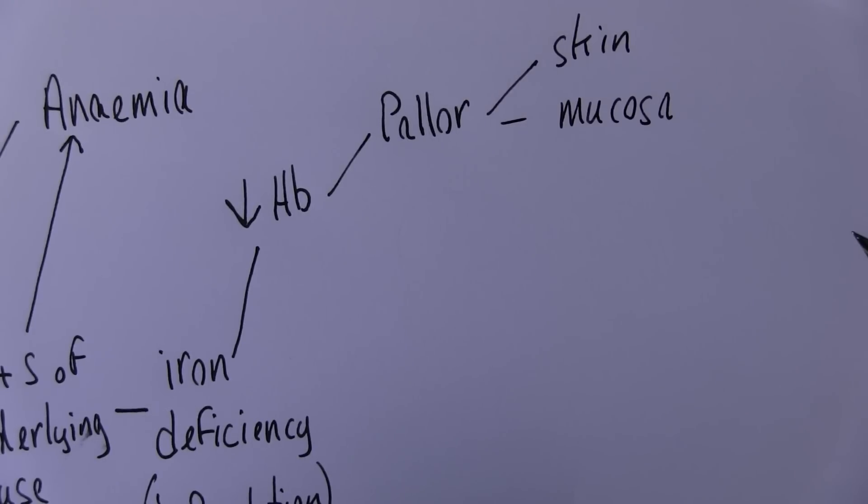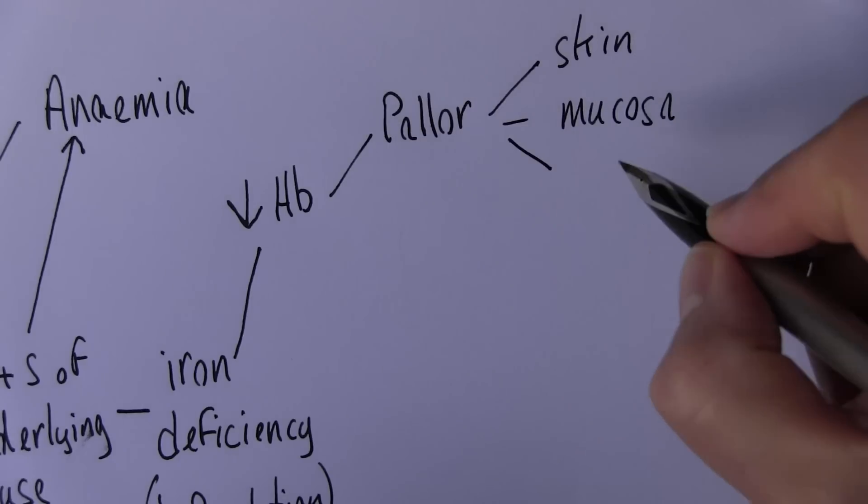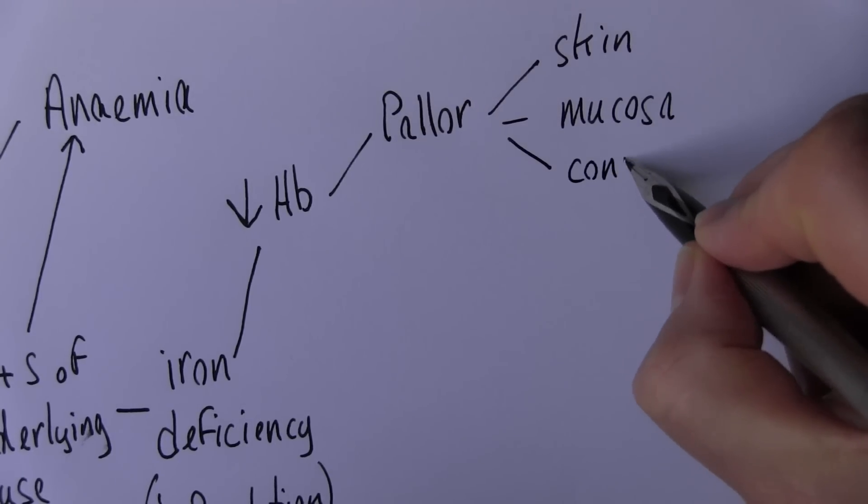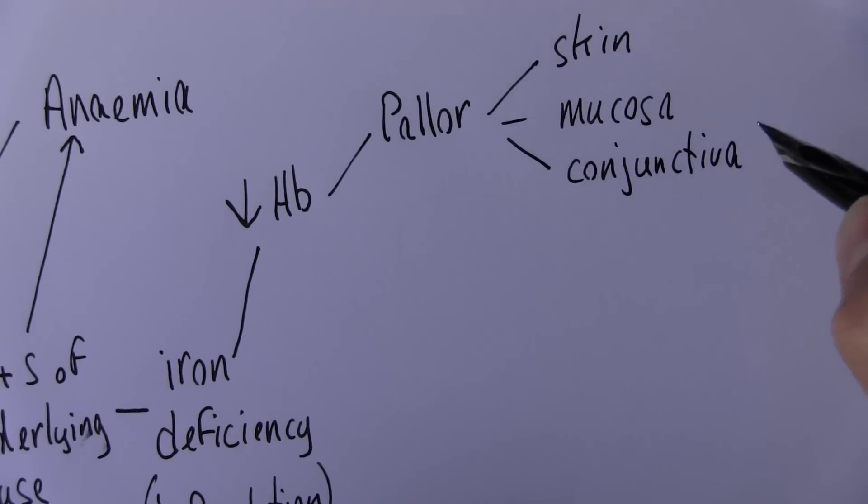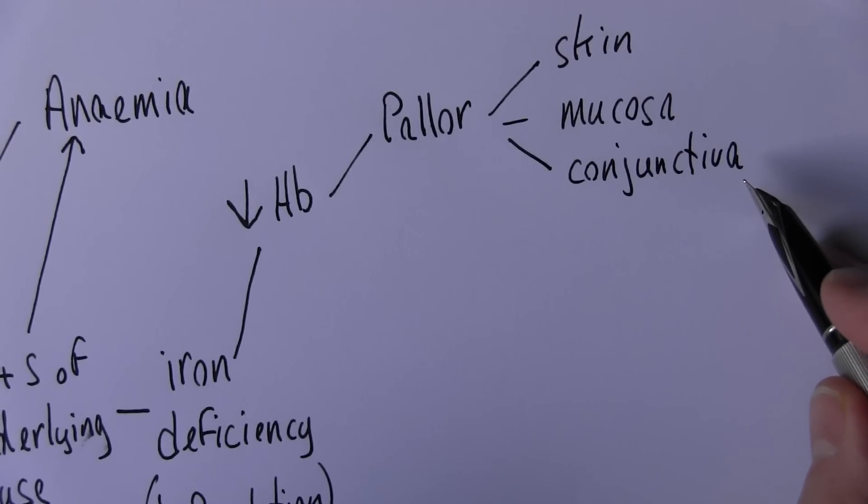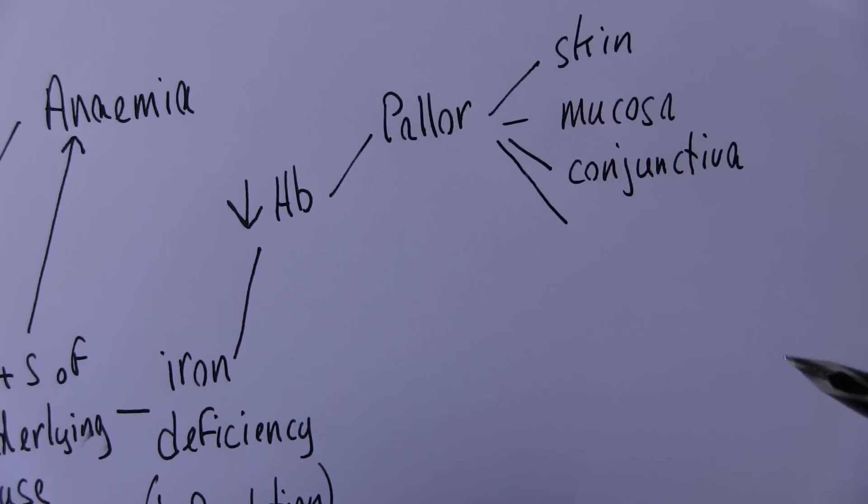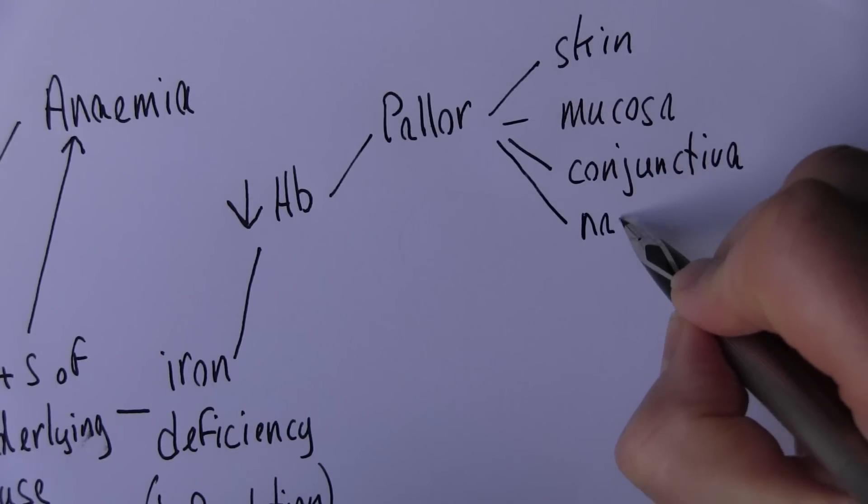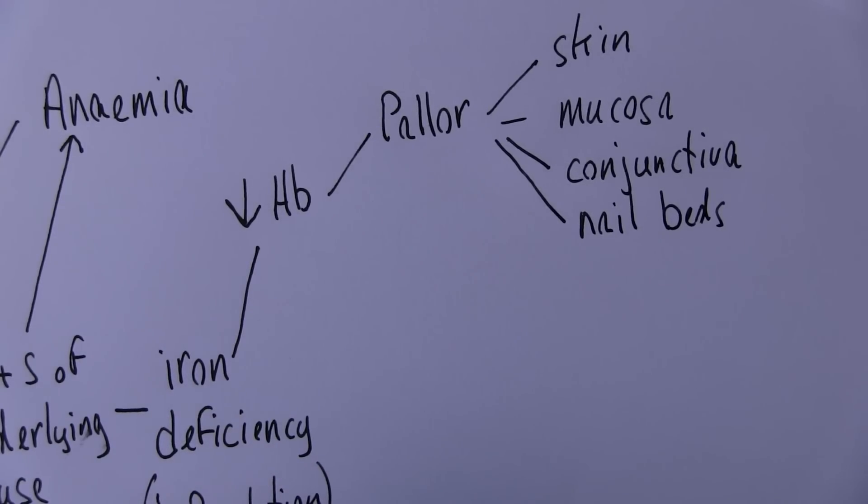So looking inside the mouth for example. The lips can look pale. Classic one is the conjunctiva. If you just peel down the lower eyelid and look at the bottom of the conjunctival sac it can appear pale. And another classic place for seeing the paleness is the nail beds. Pale looking nail beds.